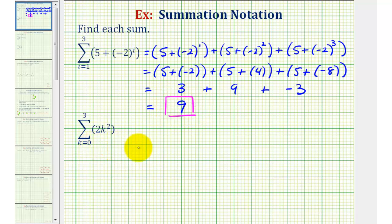Let's take a look at a second example. Notice how now the index is k, and therefore our formula involves the variable k. The lower bound does not always have to be one — notice in this case it starts at zero. It'll still increase by one until it reaches the value of three. So k will take on the values of zero, one, two, and three.